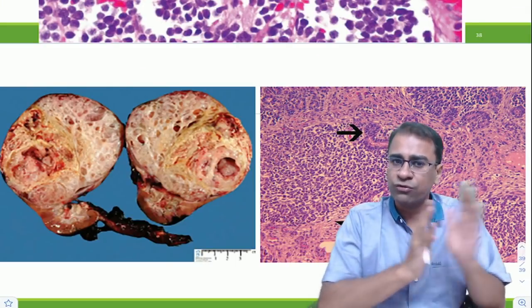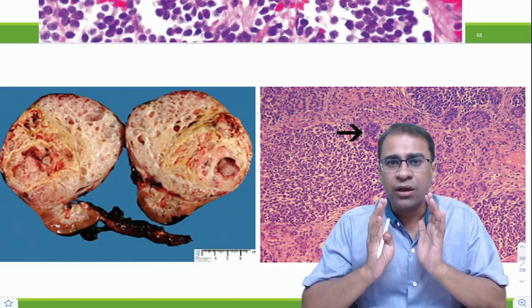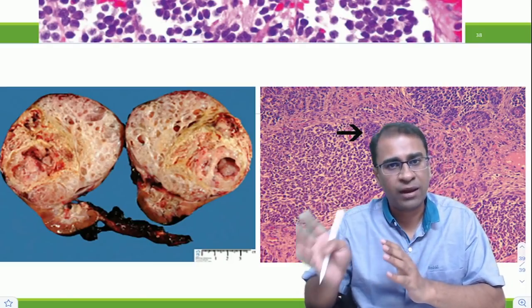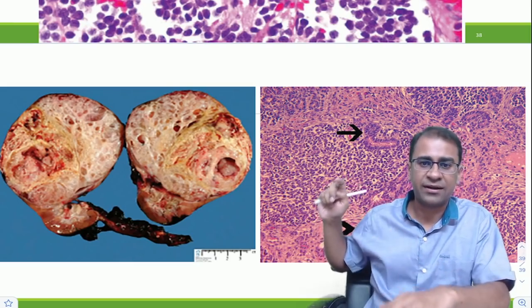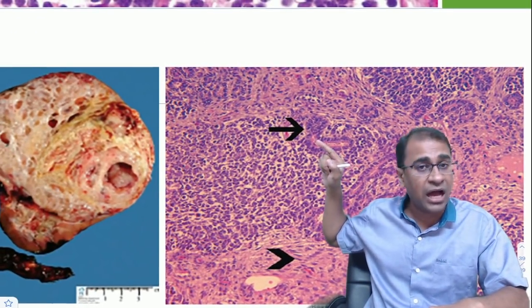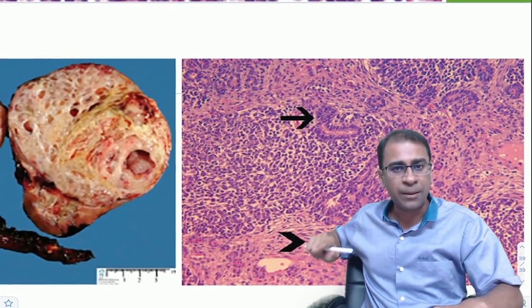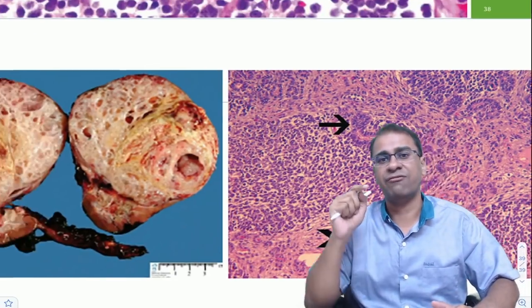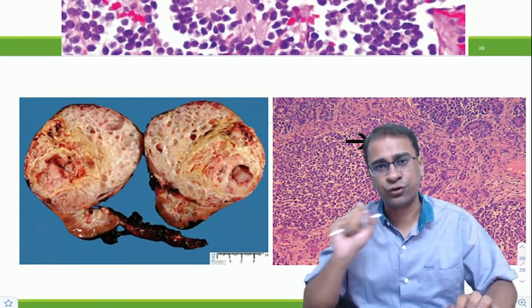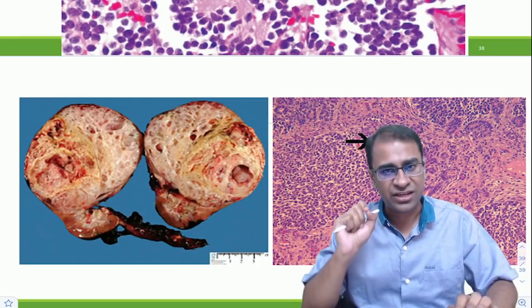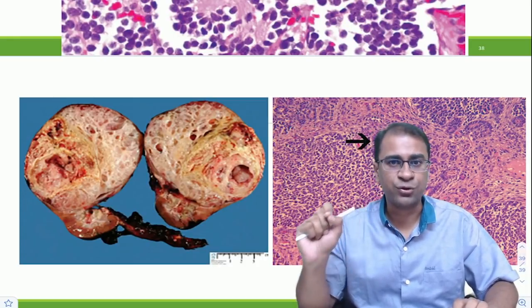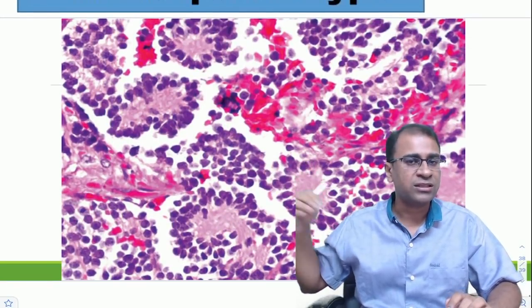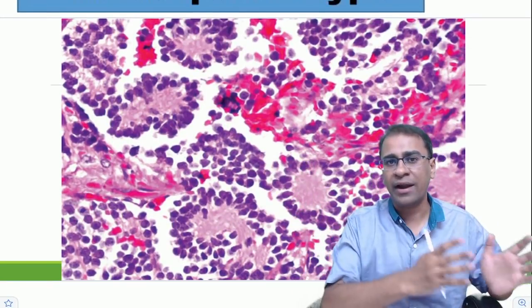Two tumors to know: first, Wilms tumor (nephroblastoma). It shows a triphasic pattern with an epithelial component (tubules), a mesenchymal stromal component, and small round tumor cells. Important associated syndromes are WAGR syndrome, Denys-Drash syndrome, and Beckwith-Wiedemann syndrome.